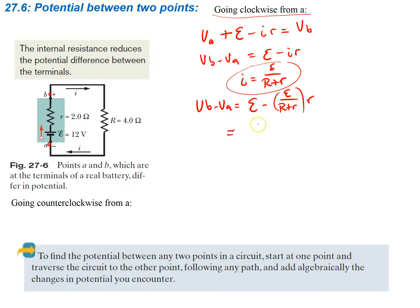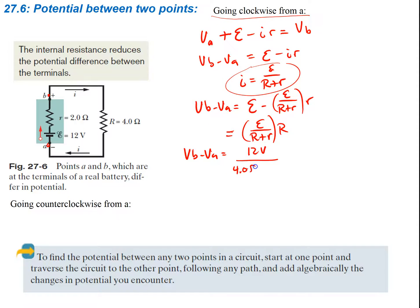Our change in potential is then going to be our EMF minus EMF divided by (R plus r) times r, which simplifies to EMF times R divided by (R plus r). Plugging in numbers: our change in potential is 12 volts divided by (4 ohms plus 2 ohms), multiplied by 4 ohms. This equals 8.0 volts. So the actual output from the battery is only 8 volts because of the internal resistance.